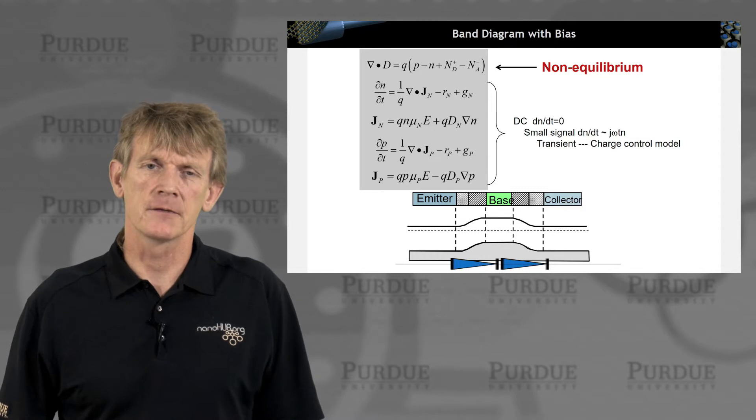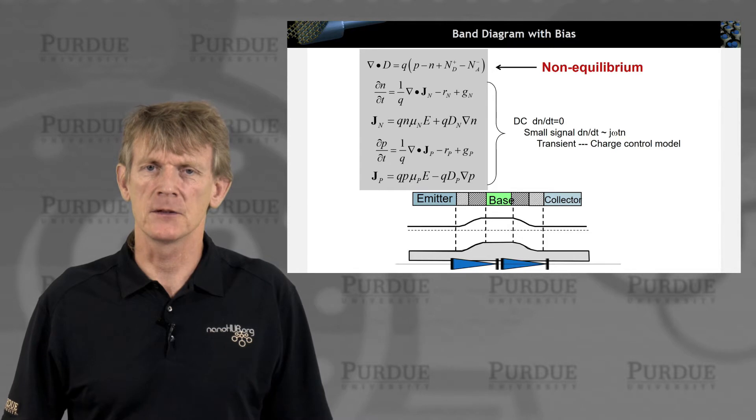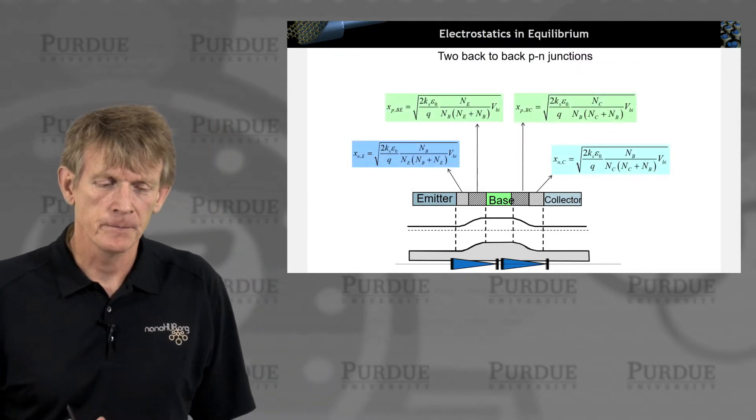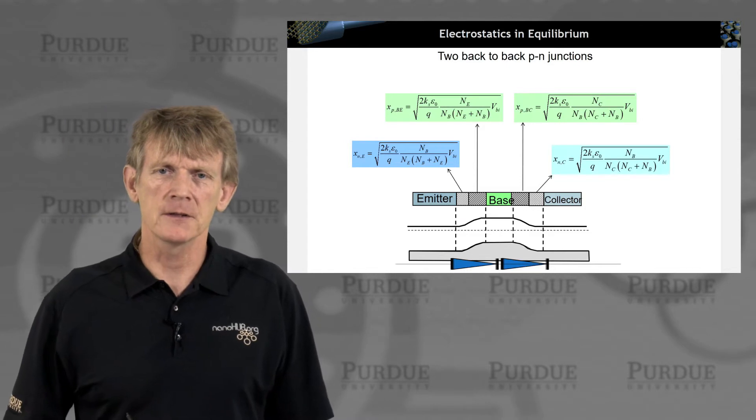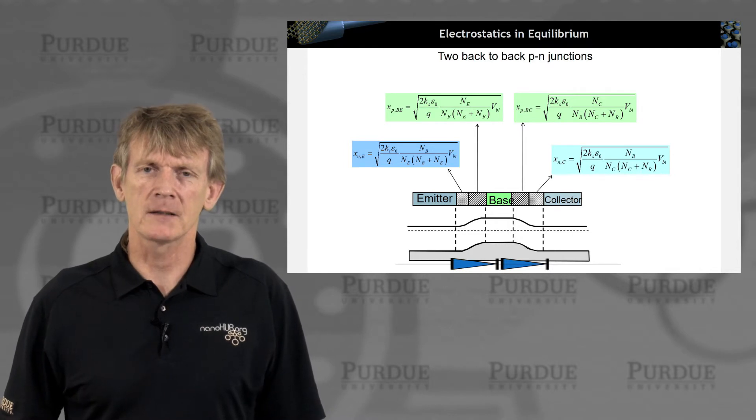Now we're going to do this out of equilibrium and we'll use the drift and diffusion expressions for the variety of currents we calculate. I had shown in the previous section the expressions for the depletion region lengths for the respective carriers on each of the junction sides.